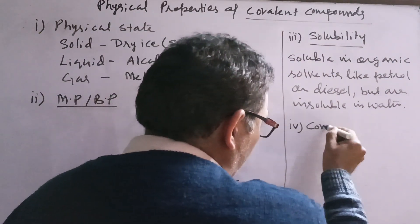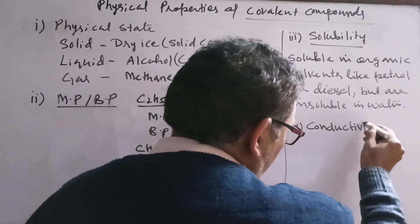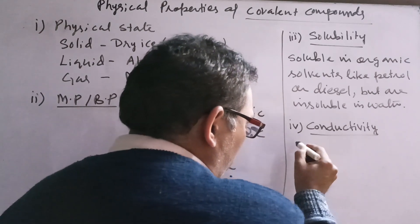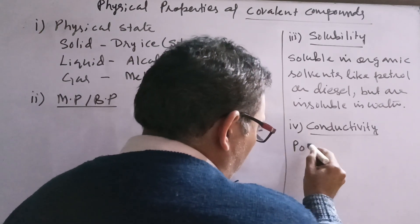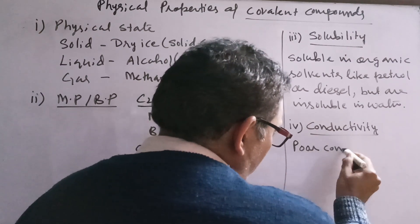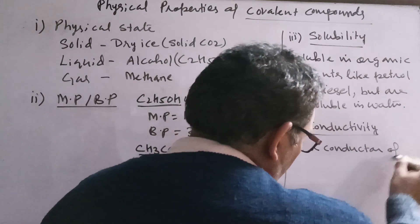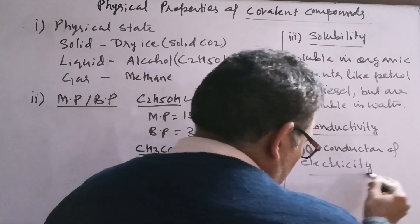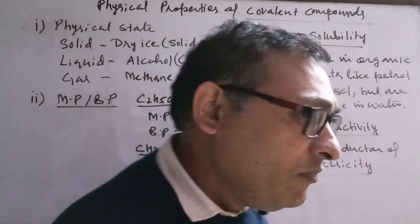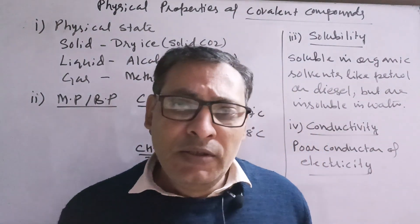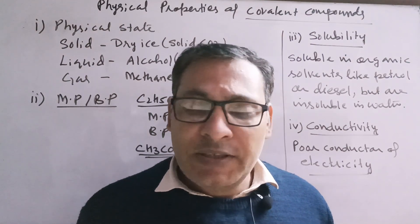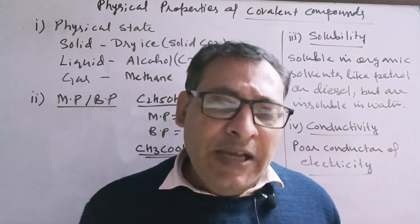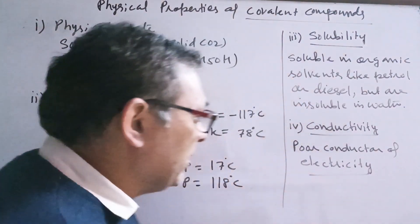Next is conductivity. Covalent compounds are poor conductors of electricity. For example, in a sugar solution, we have seen that no current flows. This is because covalent compounds do not produce any free ions, and that is why they are poor conductors of electricity.